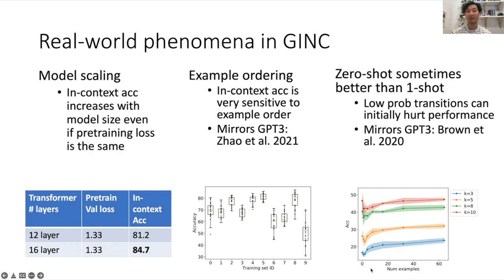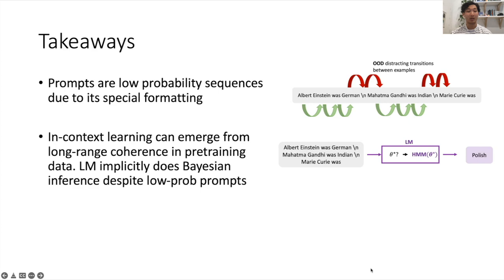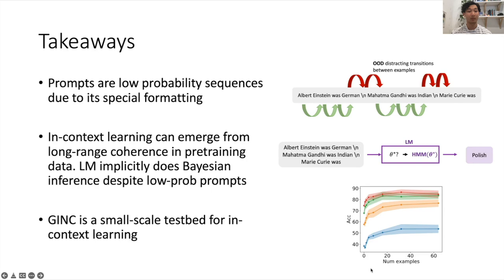So some takeaways here are that in-context learning prompts are low probability sequences due to its special formatting. In-context learning can emerge from modeling long-range coherence in the pre-training data. The language model implicitly does Bayesian inference despite the low probability prompt sequences. And using this understanding, we created GINC, which is a small scale test bed for studying in-context learning.